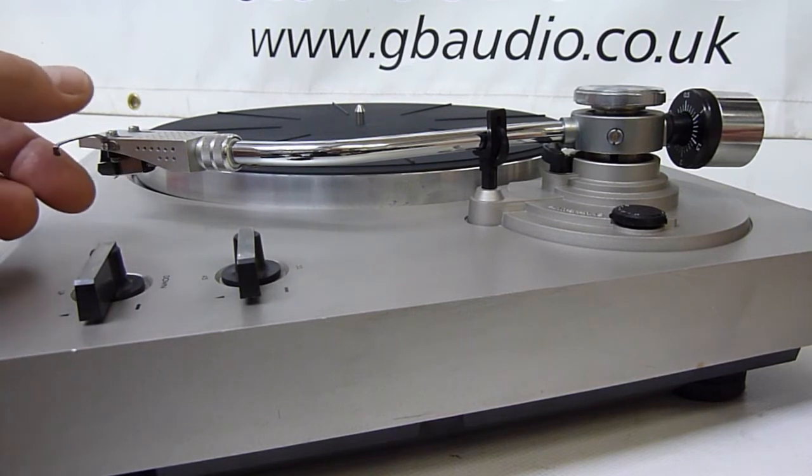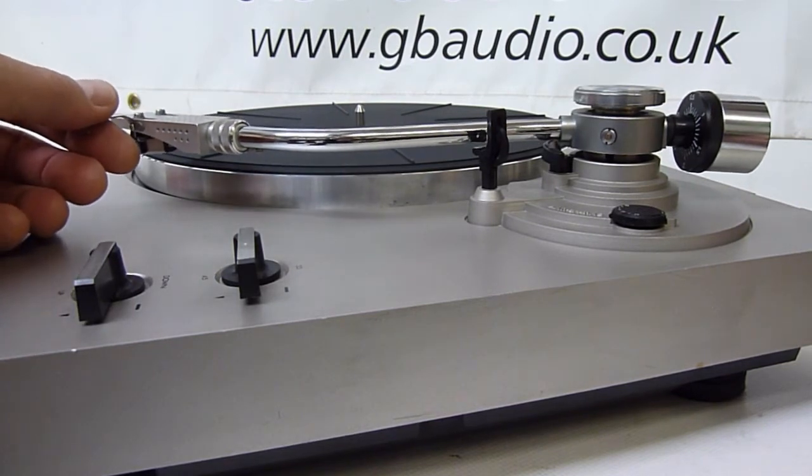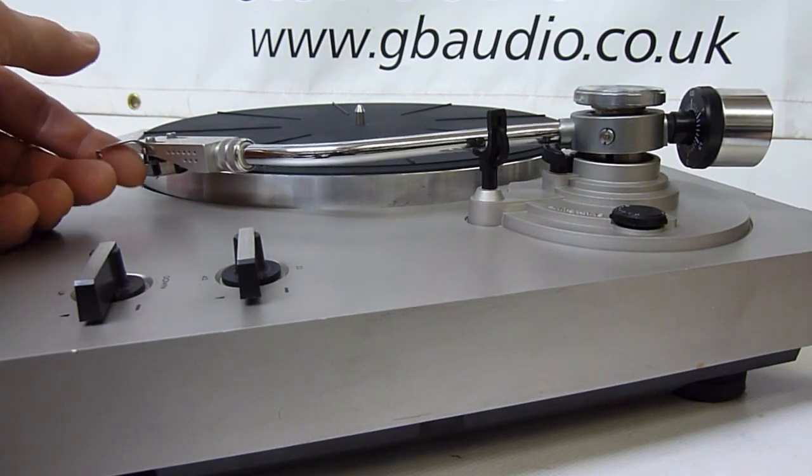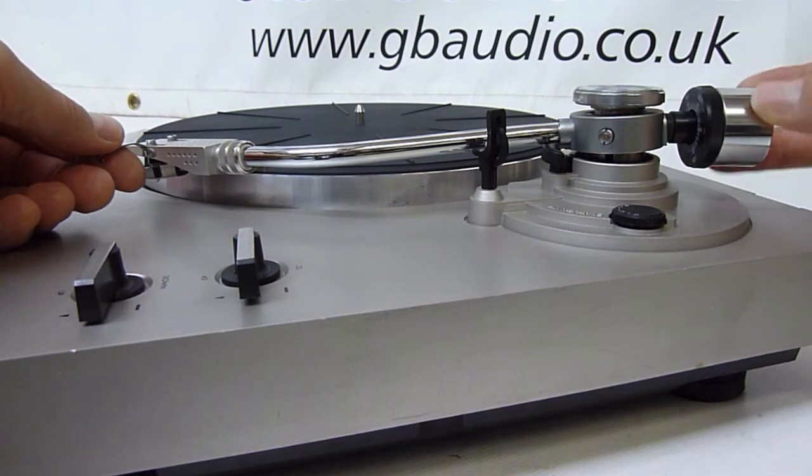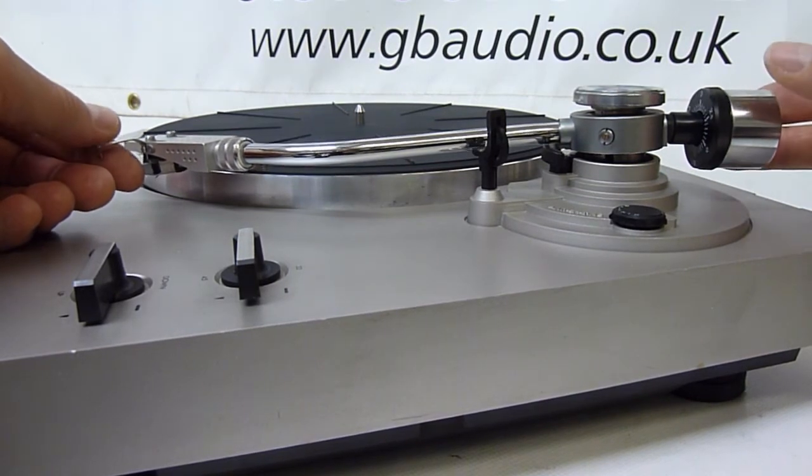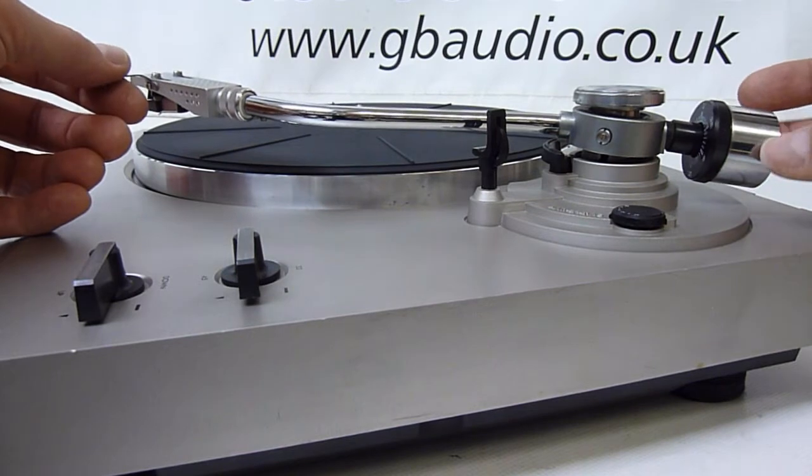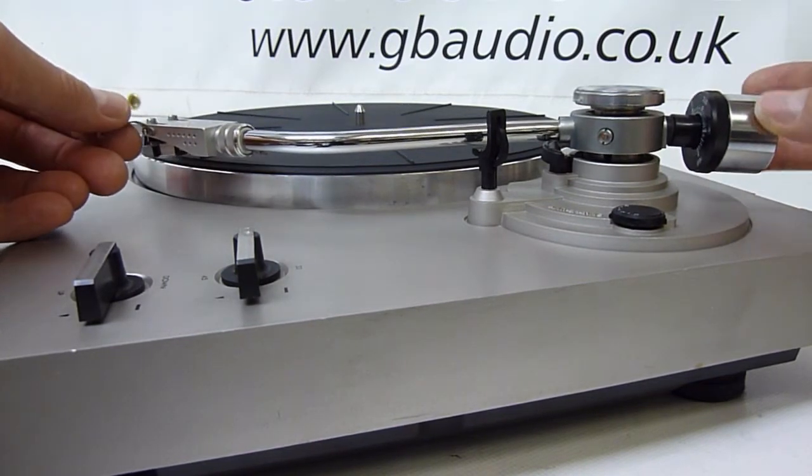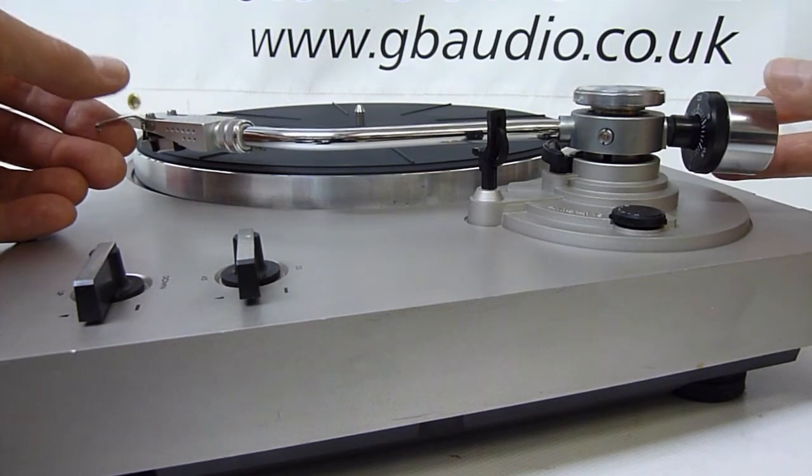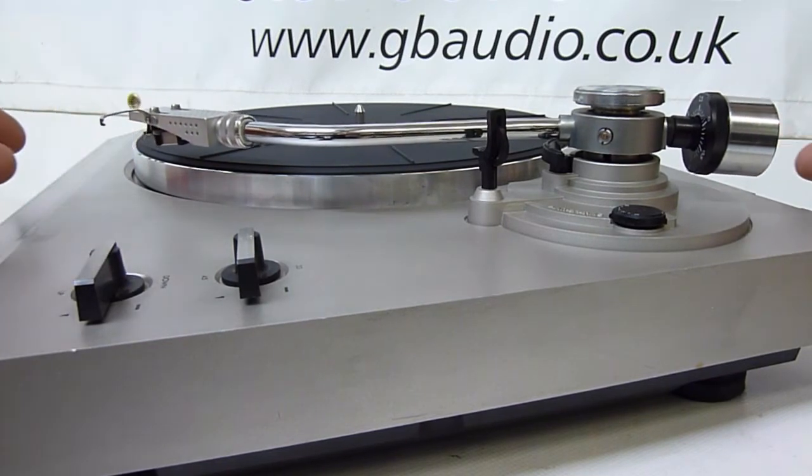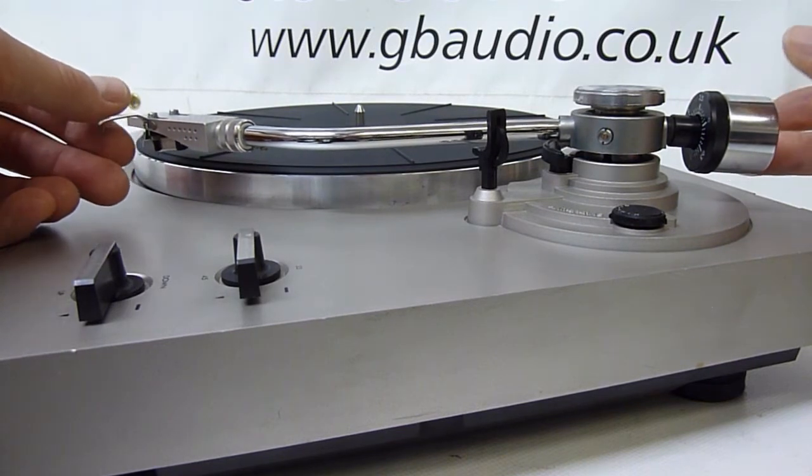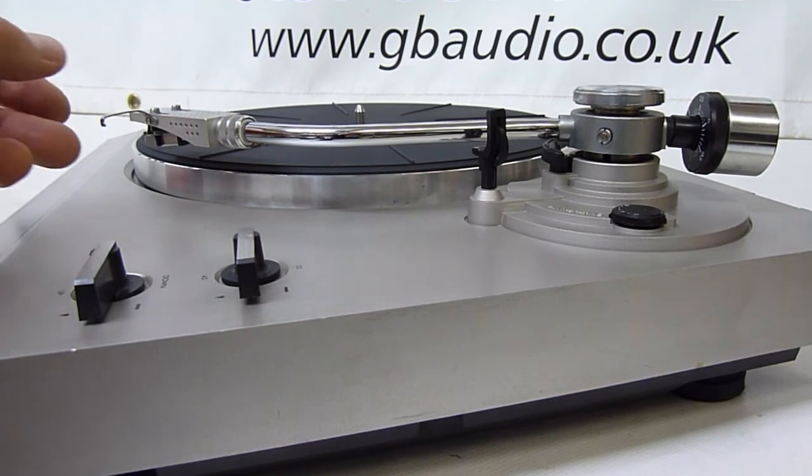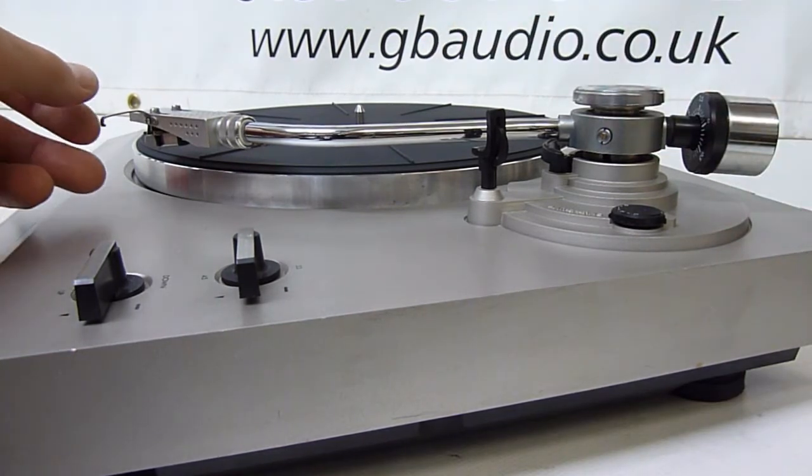Now we can take the arm off the rest and it's currently heavier at the cartridge end. By adjusting the counterweight backwards, that's too much, we want to get it to a point of static balance. It's a very fine adjustment. There we go. That's it. Neutral now.